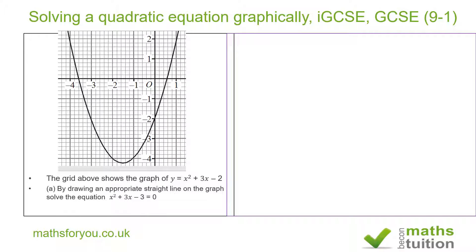The first part says by drawing an appropriate straight line on the graph, solve the equation x squared plus 3x minus 3 is equal to 0.